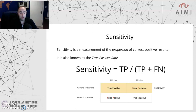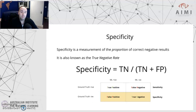Specificity, on the other hand, corresponds to the bottom row and is a measurement of the proportion of correct negative results. It's known as the true negative rate. The equation is very similar: it's the total number of true negatives over the true negatives plus false positives, and that gives you the specificity.